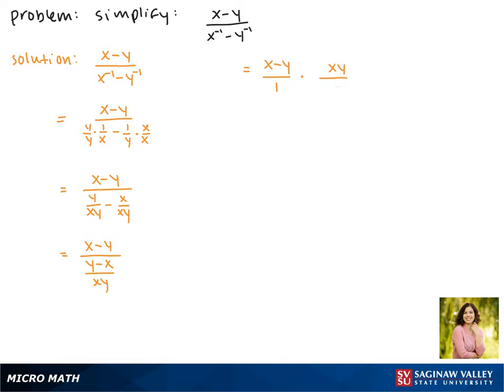Now y minus x, we can factor a negative out of so that we get the negative of x minus y. This is good for us because now we have a factor of x minus y that will cancel in the numerator and the denominator.